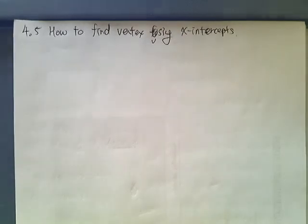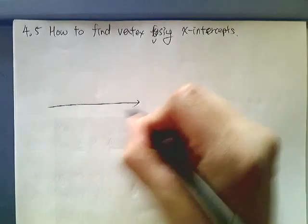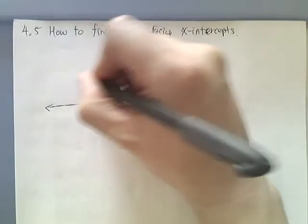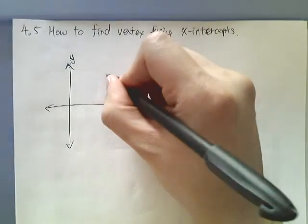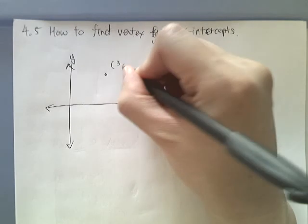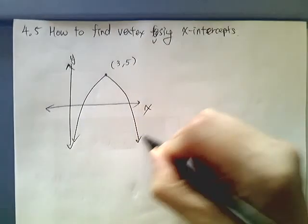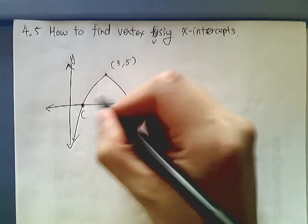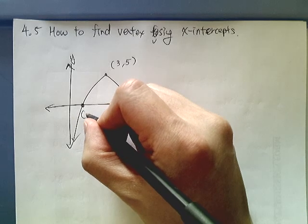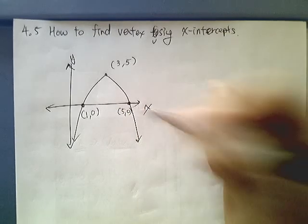So the key to know from the x-intercept and the vertex is this. So let's say I have an equation. Let's say I have a graph here. So y and an x. I have a vertex here. Let's say 3, 5. And I have a graph coming down. And these two are, let's say, 1, 0 and 5, 0.